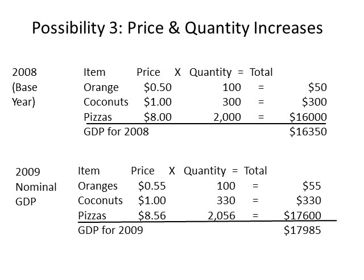In 2009, oranges sell for $0.55 and 100 oranges are sold, adding $55 to GDP. Coconuts continue to sell for $1 and 330 coconuts are sold, adding $330 to GDP. Pizzas now sell for $8.56, and 2,056 pizzas are sold, adding $17,600 to GDP, for a total GDP of $17,985. Some goods show an increase in price, like oranges. Some goods, like coconuts, show changes in quantity but no price increases. And more realistically, pizzas have increased both in price and in quantity. How can economists untangle increases in prices from increases in quantity to figure out the real value of GDP?